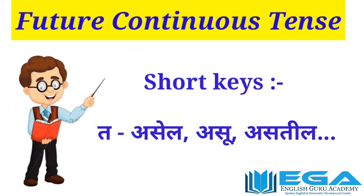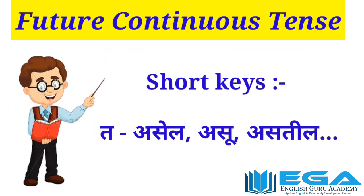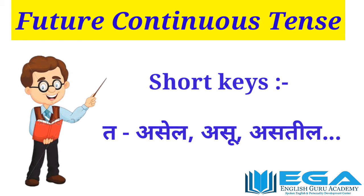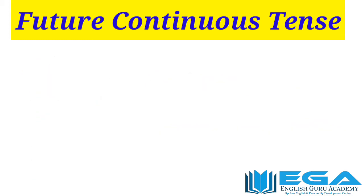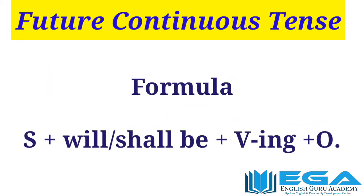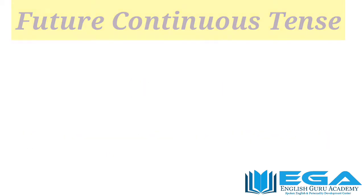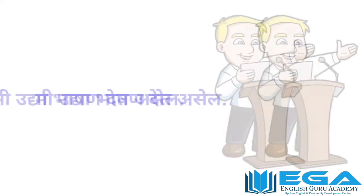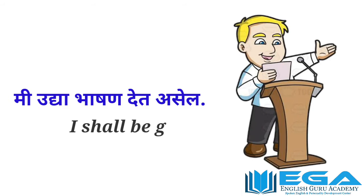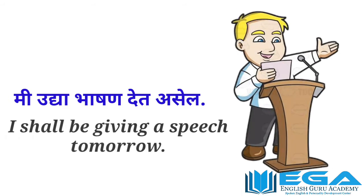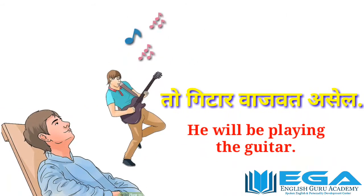Marathi sentences in the future continuous tense end with words like 'aseel,' 'asu,' or 'astil.' In English, the structure is: Subject + will/shall + be + verb+ing + object. For example: 'mi udhya bhashan det aseel' — I shall be giving a speech tomorrow. 'toh guitar vajwat aseel' — He will be playing the guitar.